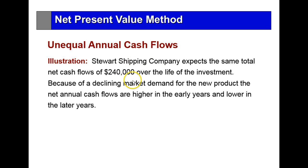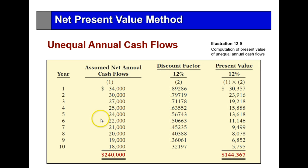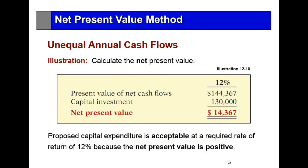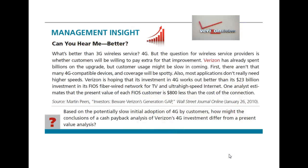In another scenario, Stewart Shipping expects the same total net cash flow of $240,000 over the life of the investment, but since it's a declining market, net annual cash flows are higher in early years and lower in later years. We discount each year's cash flow using the appropriate year's discount factor. The present value comes out to $144,367 — more favorable because we're receiving more of that money in earlier periods.